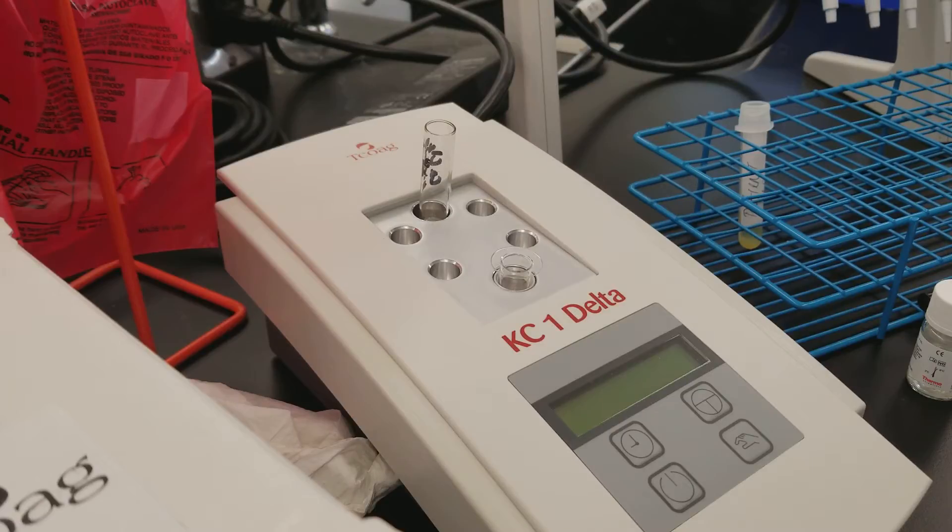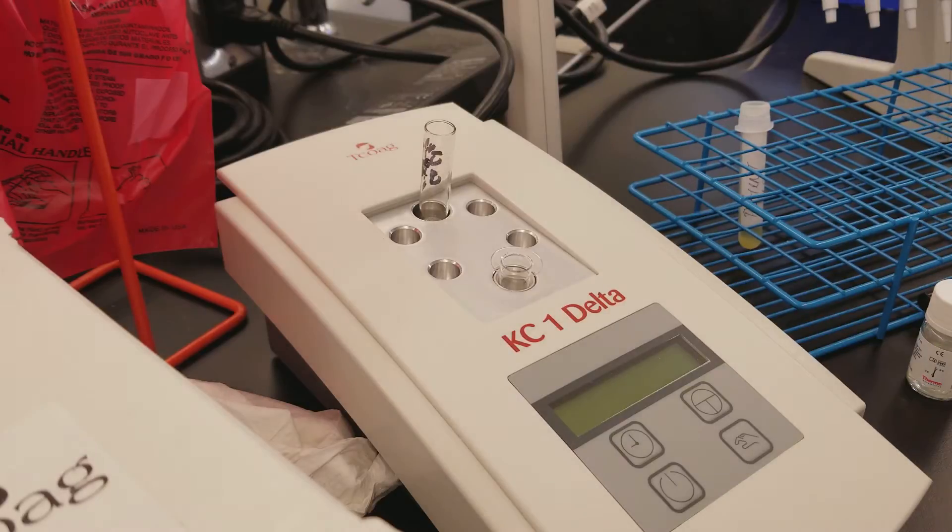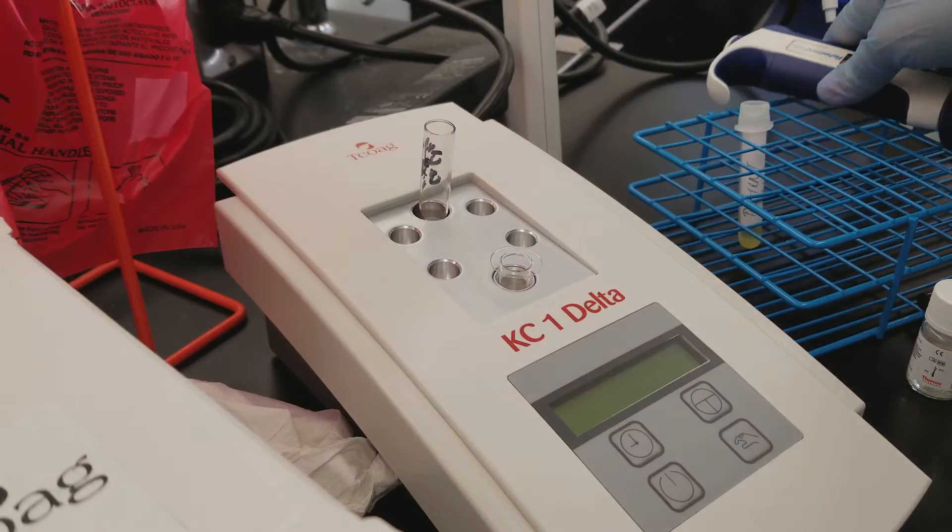Today we are working with the KC1 Delta. This is the coagulation analyzer that we use in class. It is semi-automated, meaning that we have to do the manual pipetting and manipulation of the reagents in order to get testing to be done, whereas on a fully automated analyzer, the pipetting and everything from the patient specimen and the reagents would be done for you.